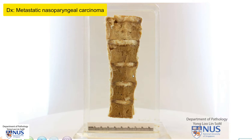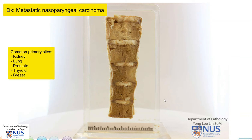Of course, there are many types of carcinomas that can metastasise to the bone. Some of the commoner culprits are kidney or renal cell carcinoma, lung cancer, prostate carcinoma, thyroid carcinoma, as well as breast carcinoma.